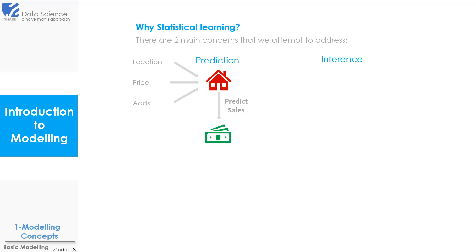Based on this data, we may like to predict the sales. This is a problem of prediction. So here we can write the dependent variable y, that is sales. The dependent variable is also called the response variable. It is written as a function of x, that is predictor variables, which are location, price, etc. So y is written as y = f(x) + ε. We will discuss what epsilon is in a while.